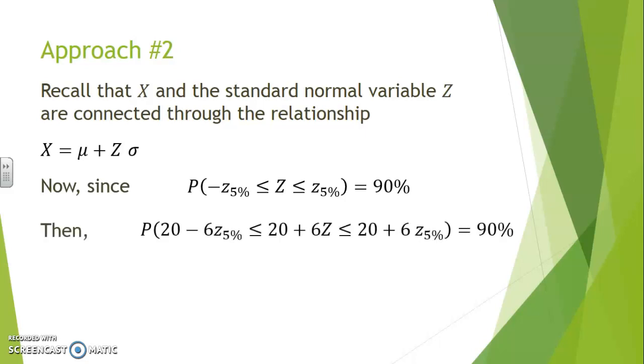Now, if we multiply all of the terms by 6 and add 20, because recall that our variable X had an average of 20 and a standard deviation of 6, then the transformation that we are bringing to the inside of the probability helps us recognize that the central term is in fact X.